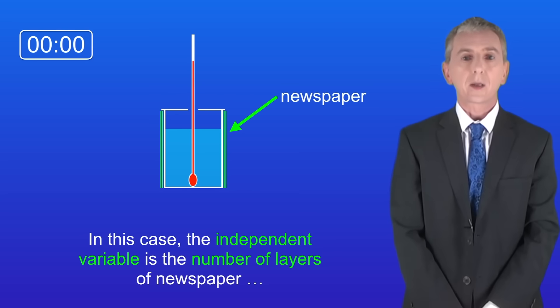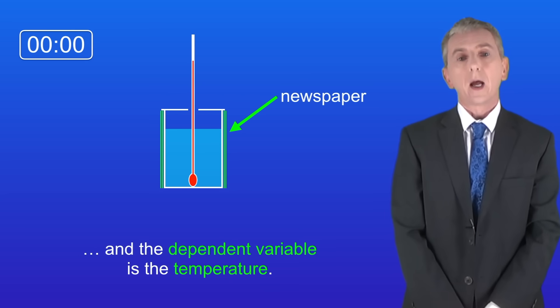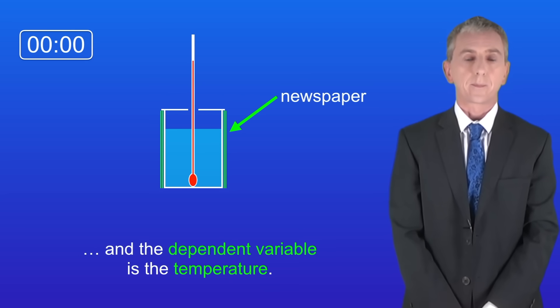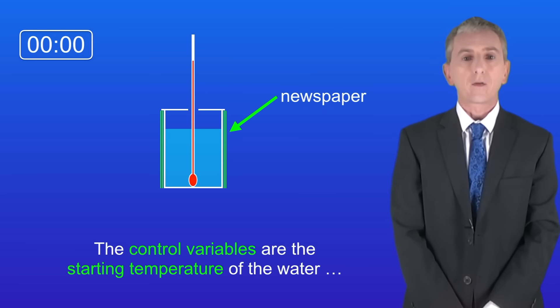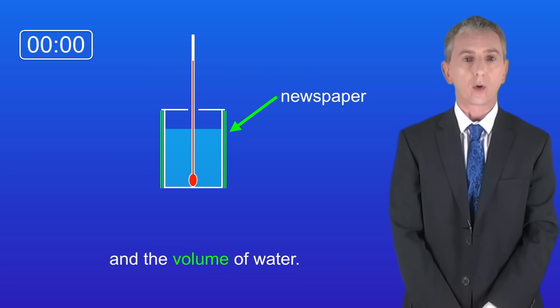In this case the independent variable is the number of layers of newspaper and the dependent variable is the temperature. Again the control variables are the starting temperature of the water and the volume of water.